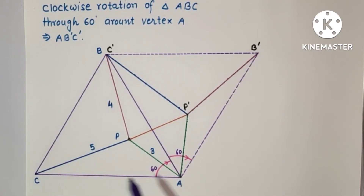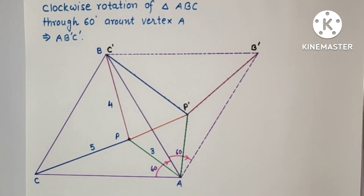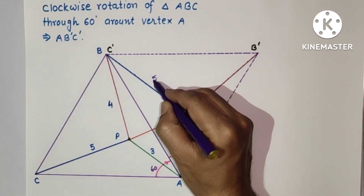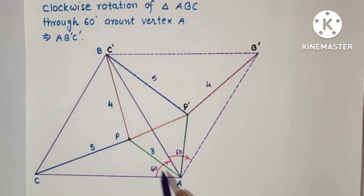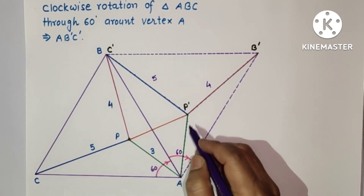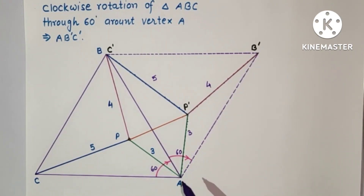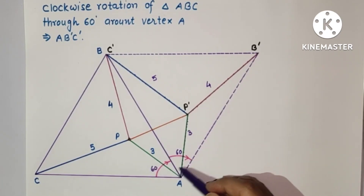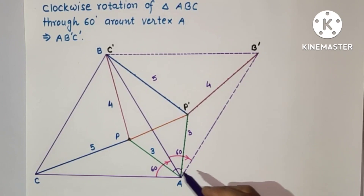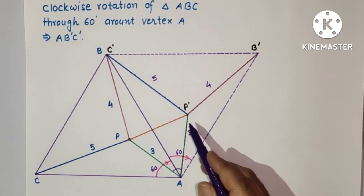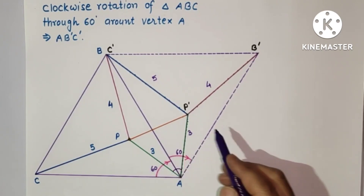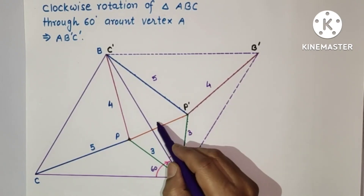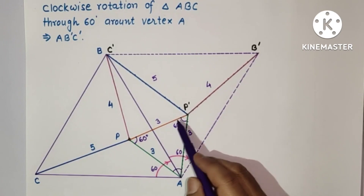After rotation, P becomes P dash. Now PC is equal to P dash C dash, so the length of PC is 5. PB is now P dash B dash, so this is 4. AP is equal to AP dash, and AP is 3, so AP dash is 3. Since AP is rotated by 60 degrees, triangle APP dash has AP equal to AP dash with a 60 degree angle between them, making it equilateral. Therefore PP dash is also 3.